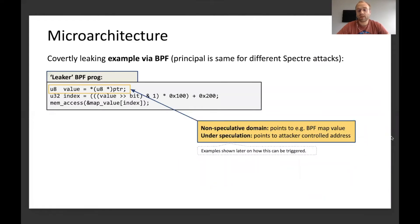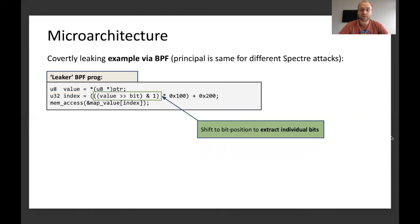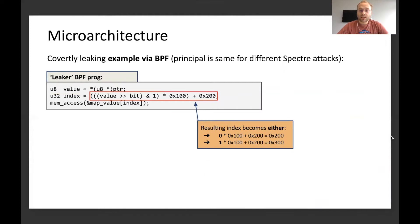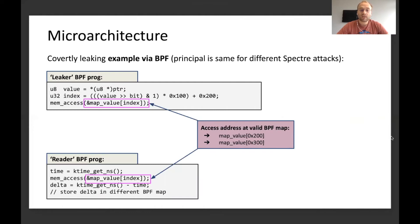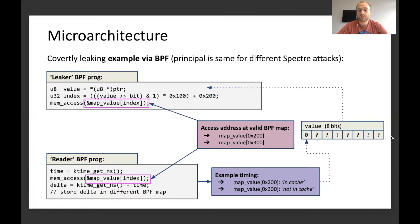To give an example of how with BPF data can be leaked covertly: you basically have a leaker program. Typically, if there would be no speculation, it would point to a BPF map value. Under speculation, it could point to an out-of-bounds attacker-controlled address. You would first read a byte from memory, then shift that to a specific bit position to extract individual bits. With the result from this index — either hex 0x200 or hex 0x300 — you access a valid known BPF map. Based on the time it takes to access this data in the map, you can reconstruct the individual bits, whether they were zero or one from that leaked byte, based on whether they were in cache or not in cache.